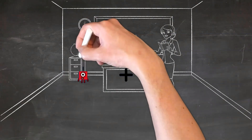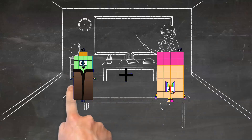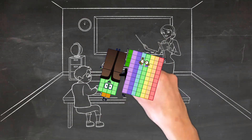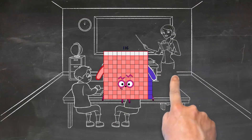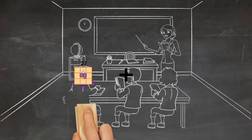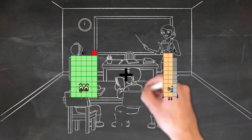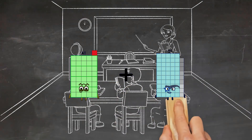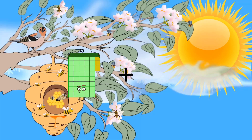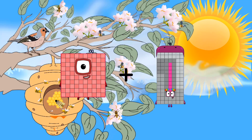42 plus 74 equals 116. 41 plus 59 equals 100.